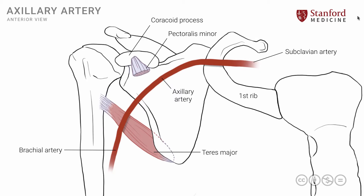Now the axillary artery is subdivided into three segments. To understand that, remember the pectoralis minor muscle that we removed. We'll put back just simple dashed lines to identify the outline of the pectoralis minor muscle. The axillary artery is divided into three parts: the first part, the second part, and the third part. These three parts have a very characteristic relationship to the pectoralis minor muscle. The first part is proximal to the pectoralis minor, the second part is posterior or deep to it, and the third part is distal to the pectoralis minor muscle.